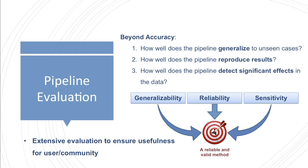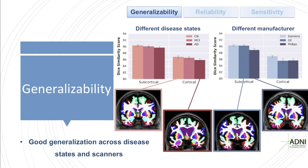We used subjects from ADNI to determine how well FastSurfer generalizes to unseen cases of different disease states and manufacturers, with respect to FreeSurfer. The segmentations of both methods closely resemble each other, as seen by the high DICE score for both subcortical and cortical structures. Segmentations deviate a bit more for extreme cases like Alzheimer patients, which may be due to noisy data, increased motion, or blurring of the white-grey matter border, but overall both methods stay relatively similar, showing good generalization across disease states and scanners.